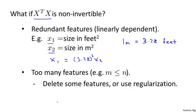And you can show, for those of you that are somewhat advanced in linear algebra, but if you're an expert in linear algebra, you can actually show that if your two features are related via a linear equation like this, then the matrix X transpose X will be non-invertible.